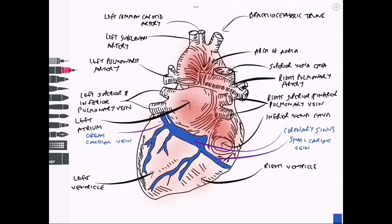Also coming from an anterior position is the small cardiac vein, also coming around from an anterior position, this time the right hand side, draining from the right atrium and the right ventricle to join the coronary sinus.